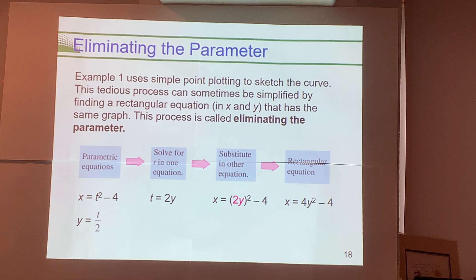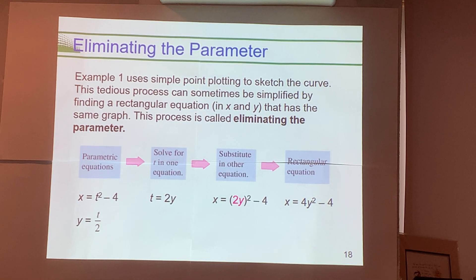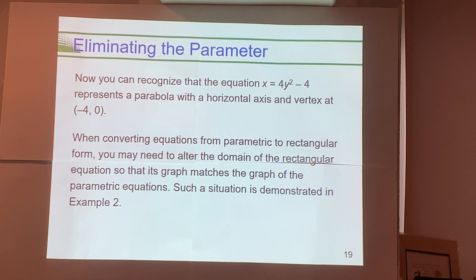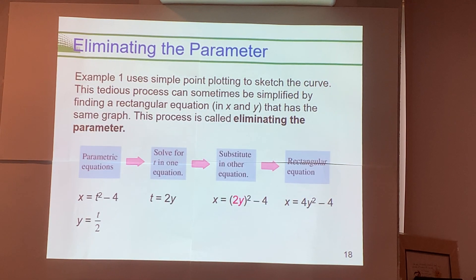The process: start with your parametric equations, solve for t in one of them, then substitute it into the other equation. This is similar to the substitution method for solving systems. Applied to the parametric equations we graphed in Example 1, we get the rectangular equation x = 4y² − 4.